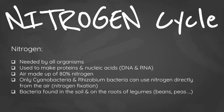Now we're going to look at the nitrogen cycle. Nitrogen is needed by all organisms — it's used to make proteins and nucleic acids, which are needed to form DNA and RNA, our genetic material. Air is actually made up of 80 percent nitrogen. Only cyanobacteria and Rhizobium bacteria can use nitrogen directly from the air, and they do this through nitrogen fixation.